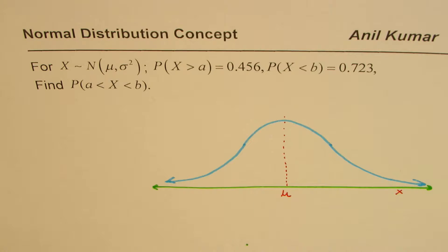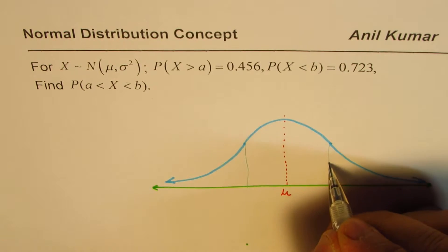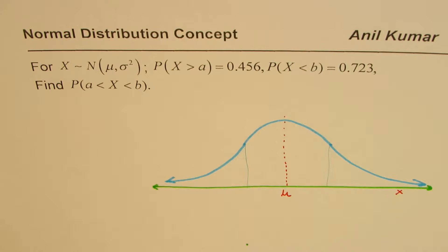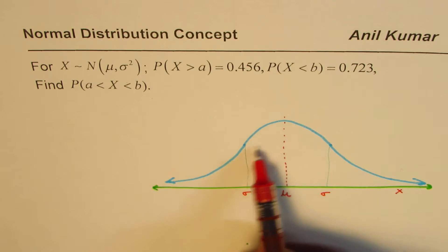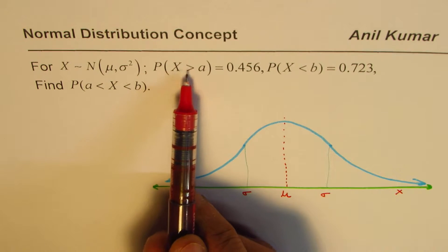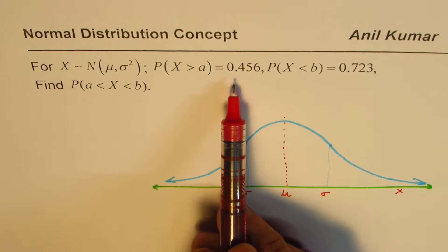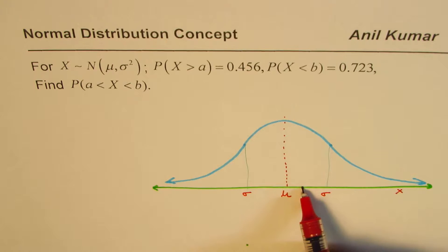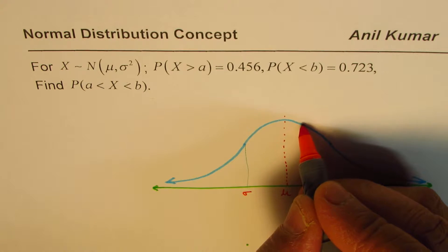The point where the concavity changes is sigma away from the mean. The distribution is symmetric, so the probability on either side is 50% on the left and 50% on the right. Now looking at the question: the probability for X being greater than A — that is, the right side of A — is less than 50%. It is 0.456, so A is somewhere just to the right of mu.